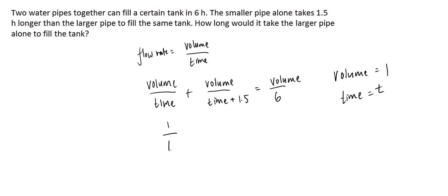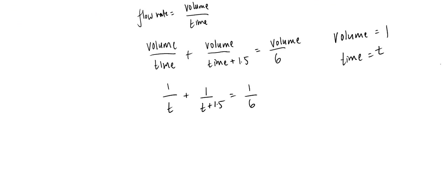We end up with the following equation: 1 over T plus 1 over T plus 1.5 equals 1 over 6. If we can solve for T here, then we can find the time it takes the larger pipe to fill the tank alone.